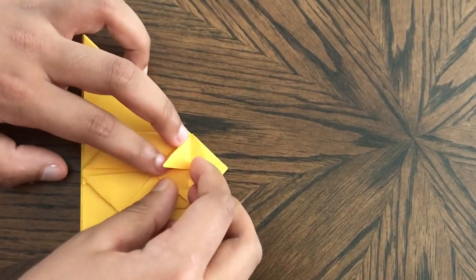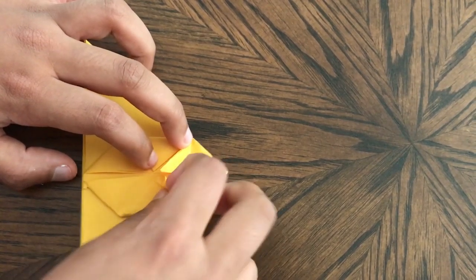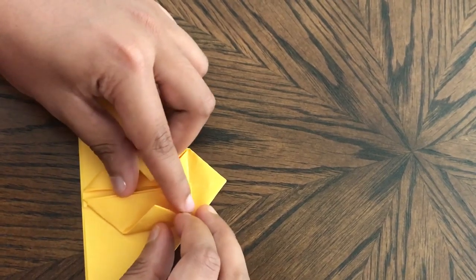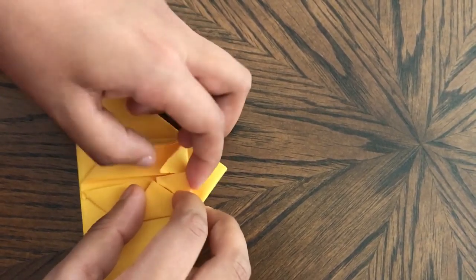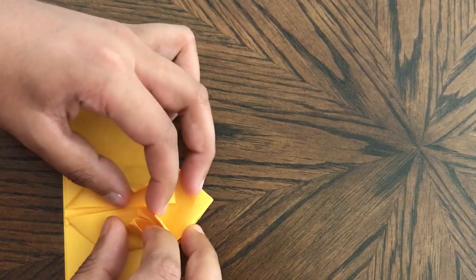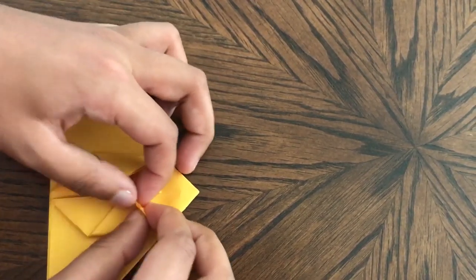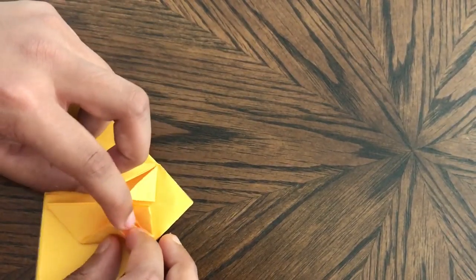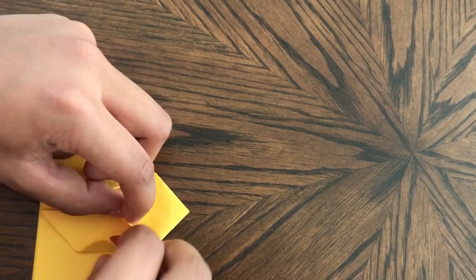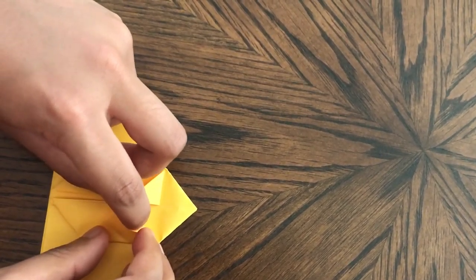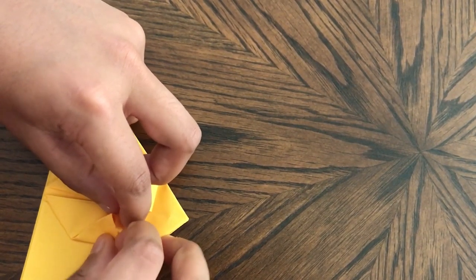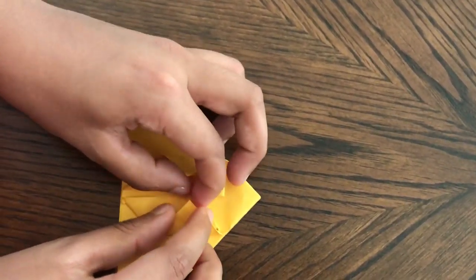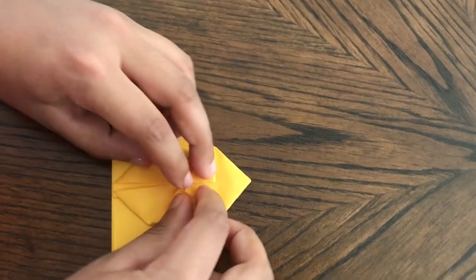And now what you're going to do is tuck this flap inside of that little pocket right there. So, open it up. First pre-crease and just fold like that. And then open this up and then tuck that pocket in.